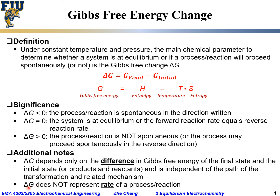Another important note: delta G does not represent the rate or speed of a process or reaction. Whether a reaction is fast or slow, delta G does not tell us directly. It tells us whether a process is spontaneous, natural, energetically favorable or energetically forbidden — but it does not tell us whether it is fast or slow, even if it is energetically favorable. That is handled separately by kinetics, which treats the rate or speed for a process or reaction.